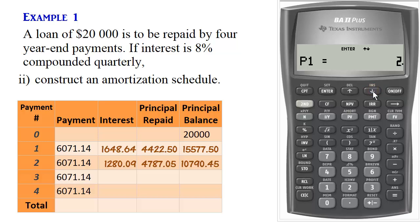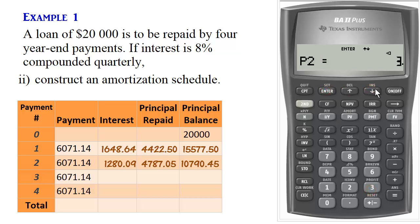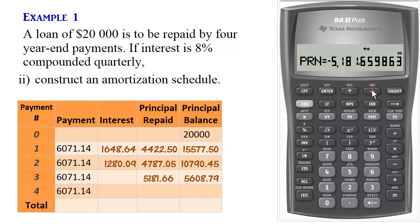We do the same thing for period three: enter three for P1 and then enter three for P2 as well. We scroll down and get the balance, the principal repaid, and the interest.